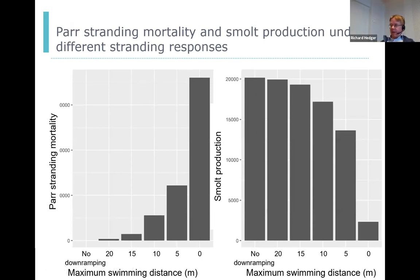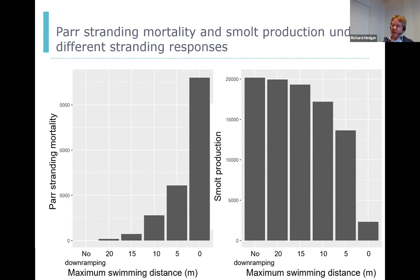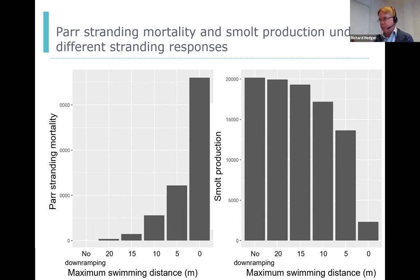We've also been investigating one of the key uncertainties: how the fish response to stranding affects population characteristics. We know that fish can swim away from dewatering areas during down-ramping, but there's some inconsistency in the literature as to how far they can swim. If fish have a high swimming ability, there won't be much stranding mortality and you'll get high smolt production from the river. If fish have a limited ability to swim, you'll get much more stranding mortality and a much lower smolt production. We're working on this as a paper, understanding the interaction between habitat availability, which areas are stranding, and what behaviours the fish are able to show.